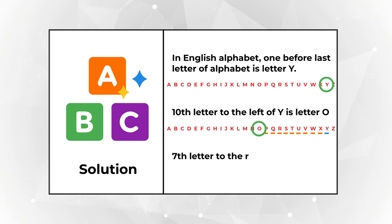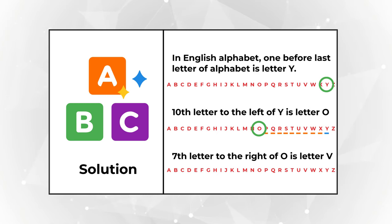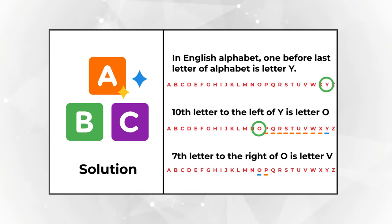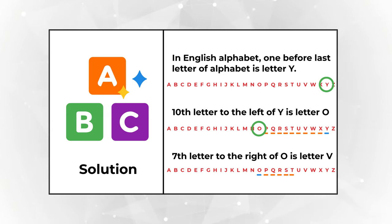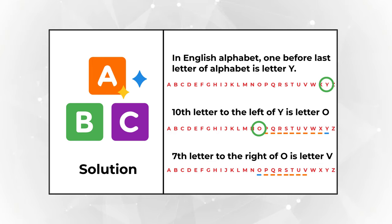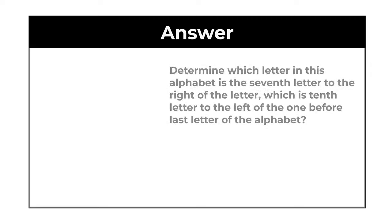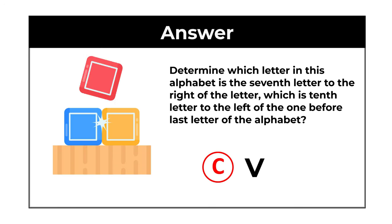Now we need to determine the 7th letter to the right of the letter O. Let's do the math: 1, 2, 3, 4, 5, 6, and 7. As you can see, this is the letter V. So the correct choice here is Choice C, letter V.